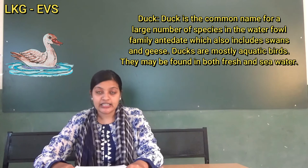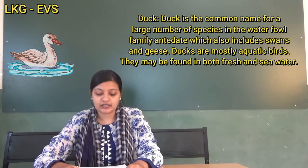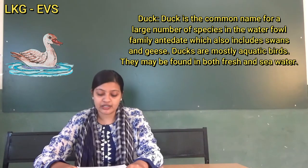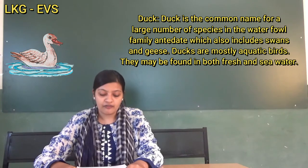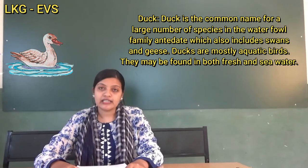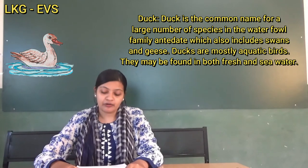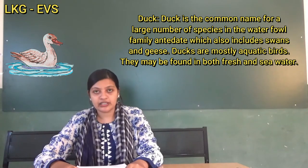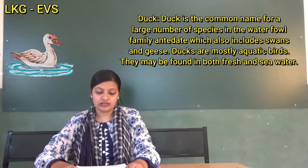Next, we will go with duck. D-U-C-K. Duck is the common name for a large number of species in the waterfowl family Anatidae, which also includes swans and geese. Ducks are mostly aquatic birds and may be found in both fresh water and sea water.